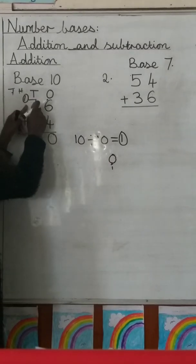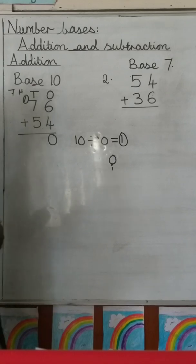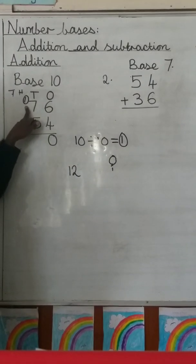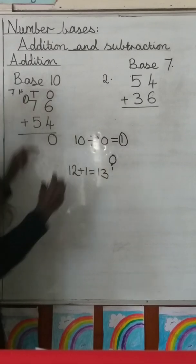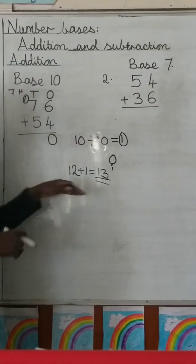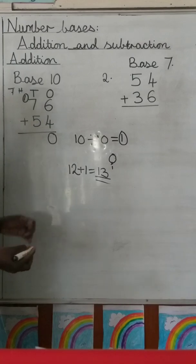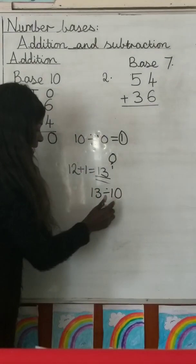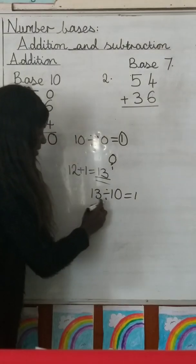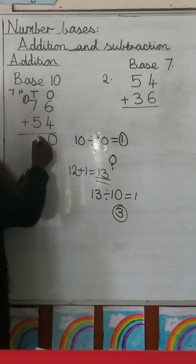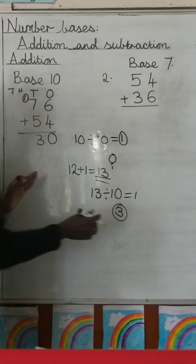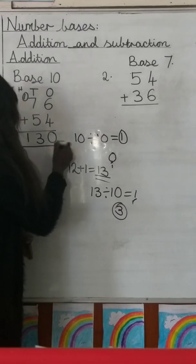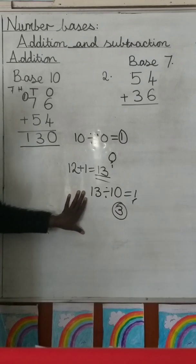Now you add the tens column: 7 plus 5 gives us 12. Remember you carry the 1, so you add it to 12, which gives 13. We divide 13 by 10: the quotient is 1 and the remainder is 3. Write the 3 there. Since there's no other number to add to, you put the carried 1 down as well. So the answer is 130. That is how we do base 10 addition.